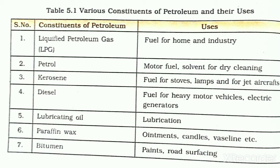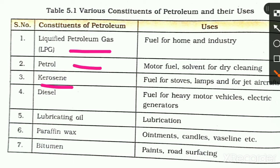To summarize, the petroleum products are: LPG, petrol, kerosene, diesel, lubricating oil, paraffin wax, and bitumen — each one has its own uses.